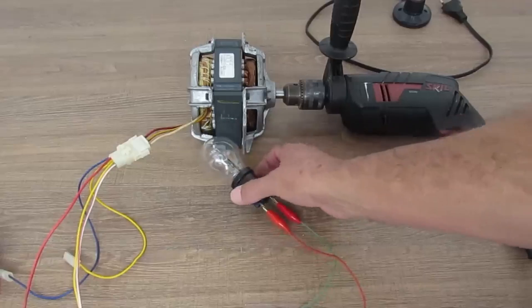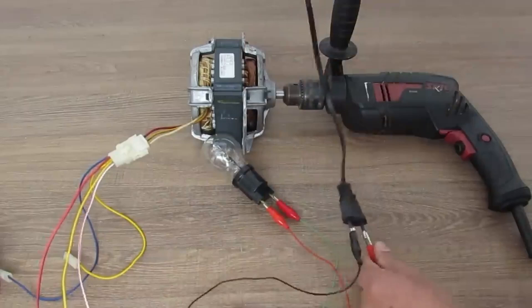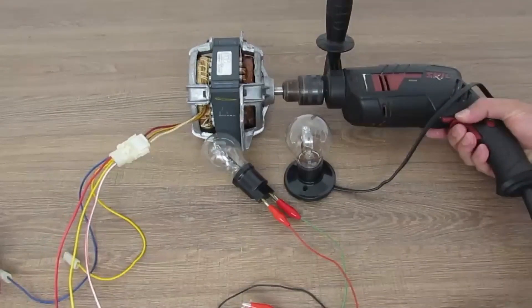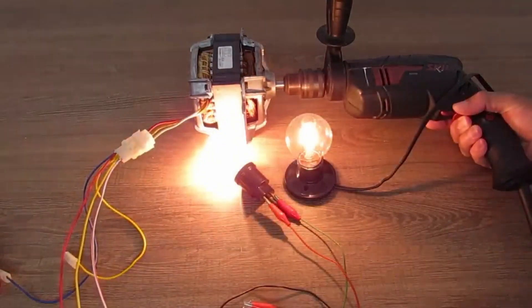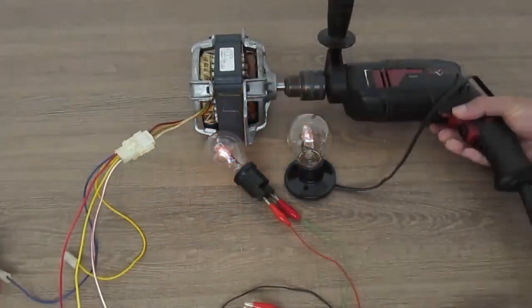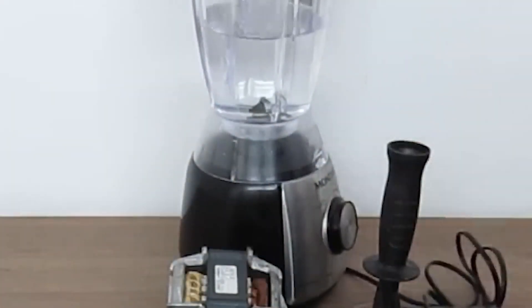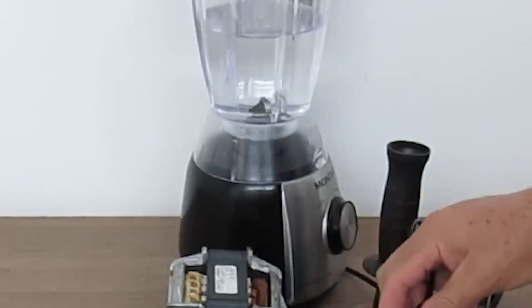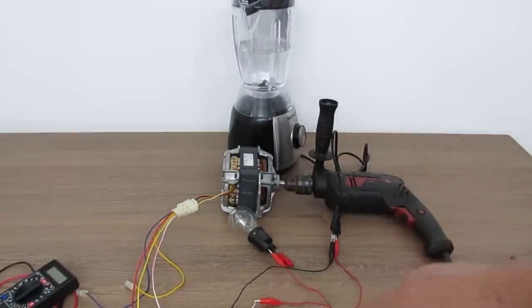Let's see if we can turn on two of them. I'm going to use the other connection. Now I have a blender here, its power is 250 watts, and we're going to test it too. So let's try to turn on the blender and our 75w light bulb at the same time.